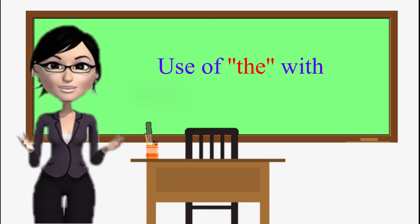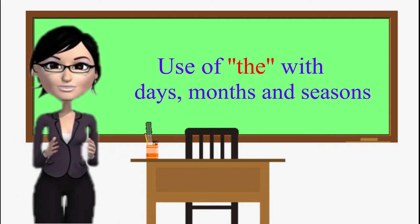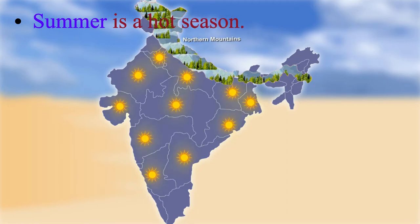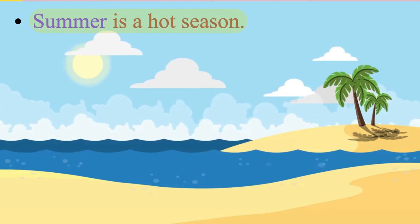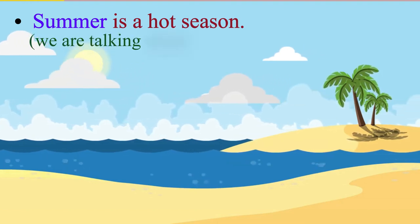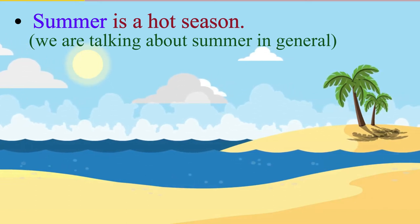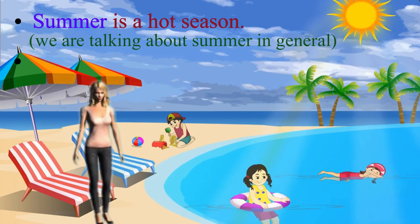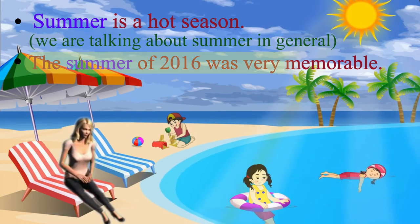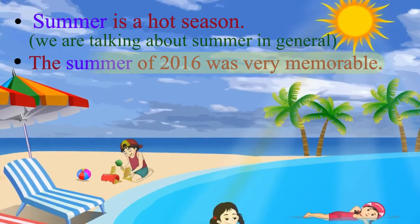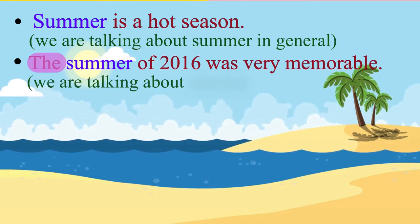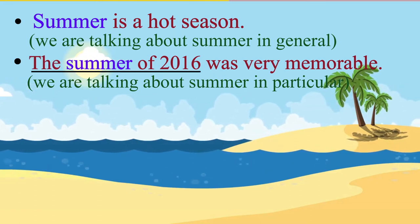Use of 'the' with days, months and seasons. 'Summer is a hot season.' In this sentence, we do not use an article because we are talking about summer in general. Now consider: 'The summer of 2016 was very memorable.' In this sentence, we use 'the' because we are talking about summer in particular — the summer of 2016.